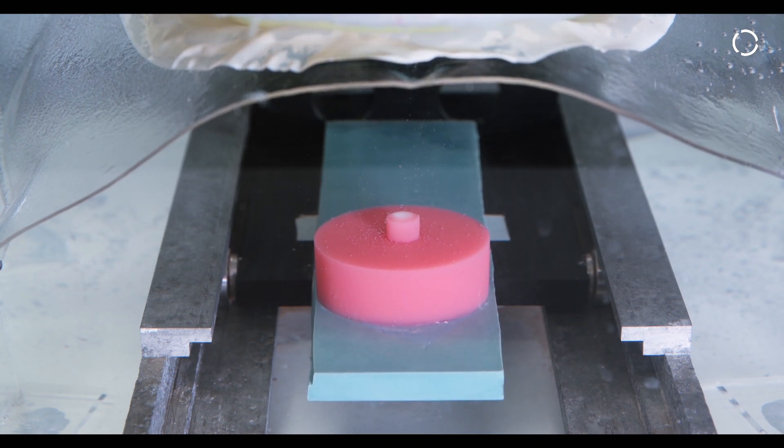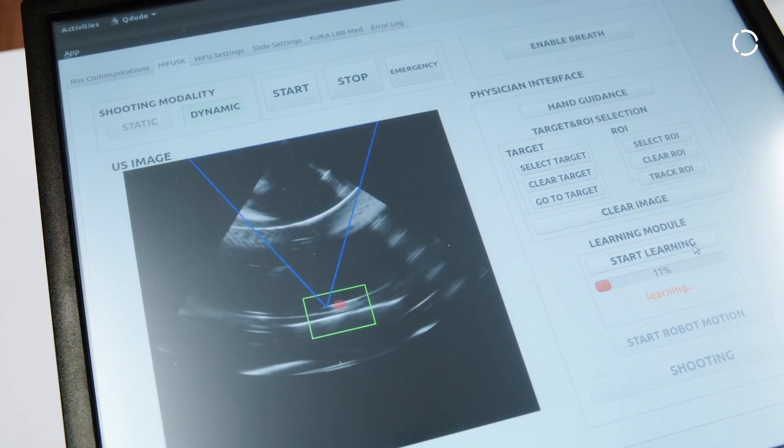We have validated the Hyphus platform both in dry lab and ex vivo, and we recently received the approval to perform in vivo on pigs Hyphus robotic treatments both on non-moving organs like the uterus and on moving organs like the kidney.